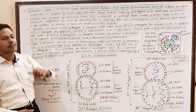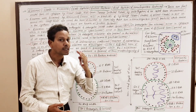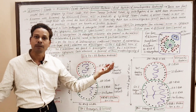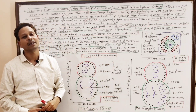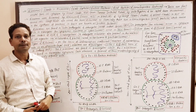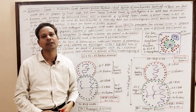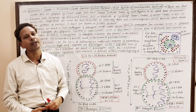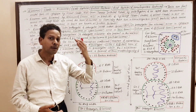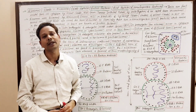These ribosomes are involved in the synthesis of proteins, so these are named protein factories. Ribosomes are found in both prokaryotic as well as eukaryotic cells.